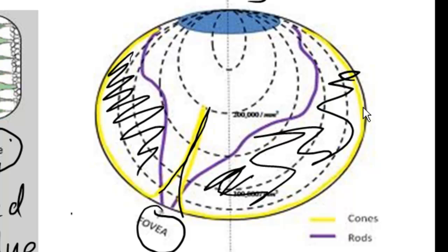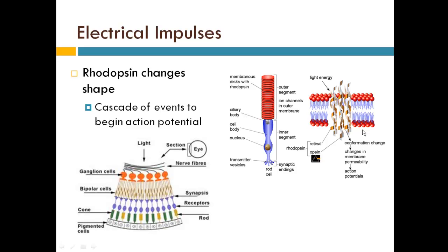Okay. So rods and cones are two different types of photoreceptors in the retina. Now let's look at one more step. How do these rods and cones actually create electrical impulses that get sent to your brain?